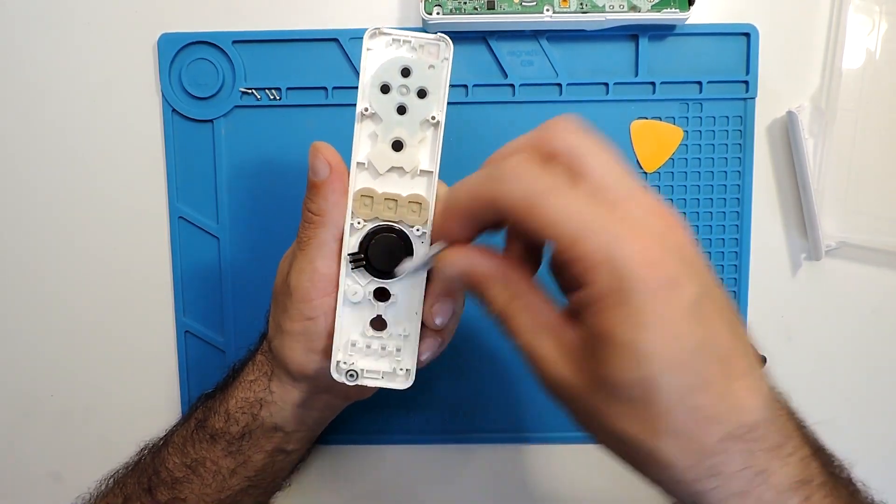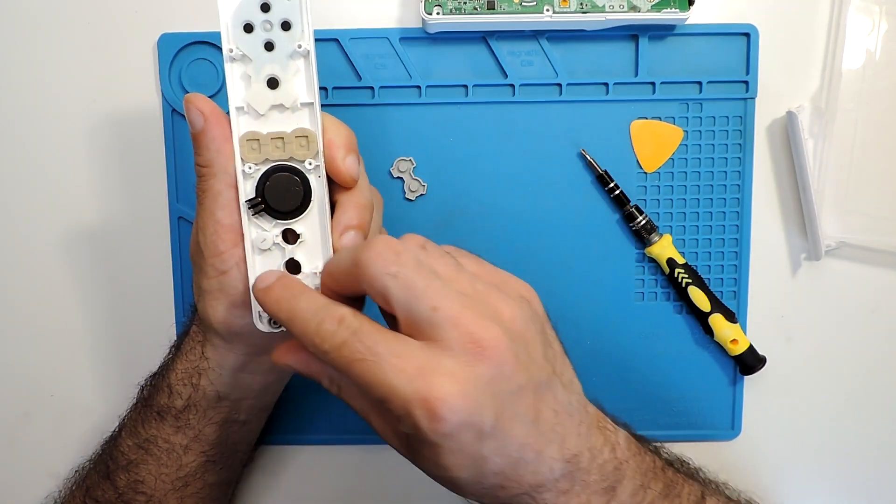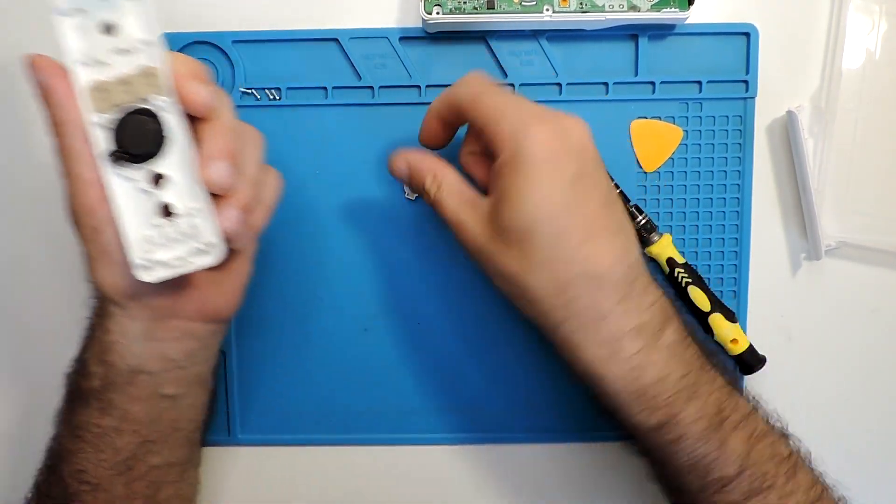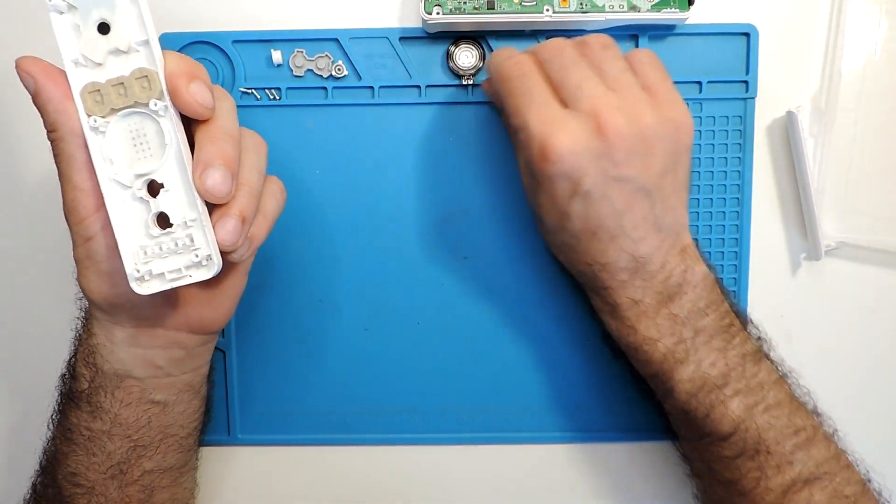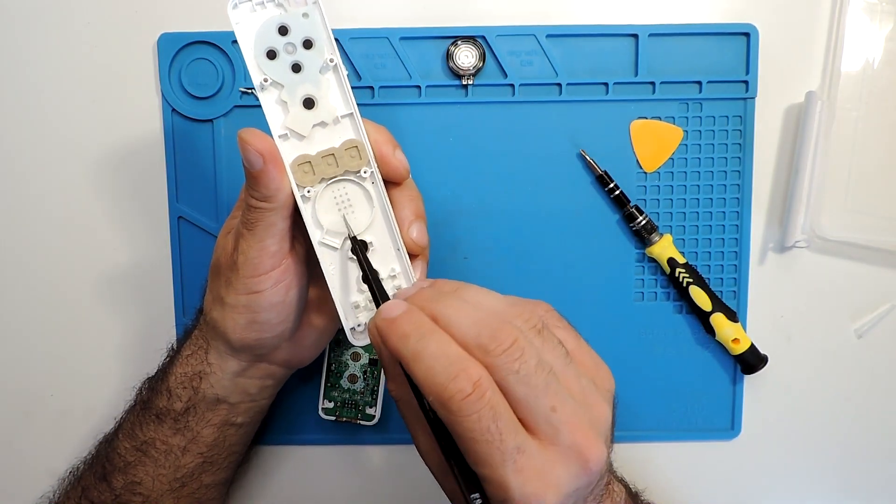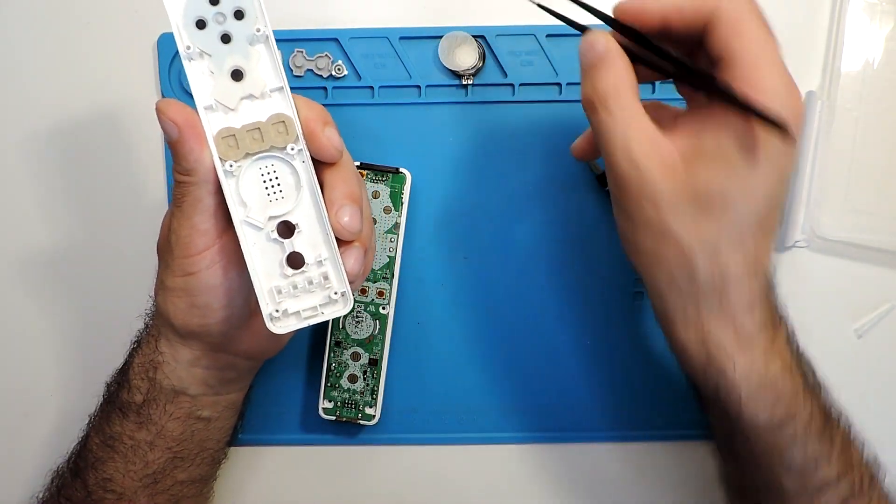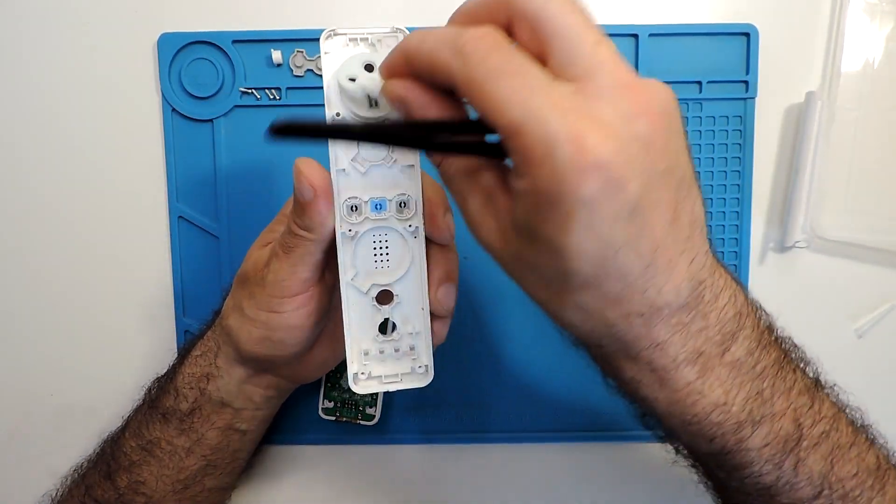Otherwise all these buttons come off right away. You'll have all the buttons—everything comes out right away, including the speaker. The speaker has a small cover as well. All of this comes out pretty easily.